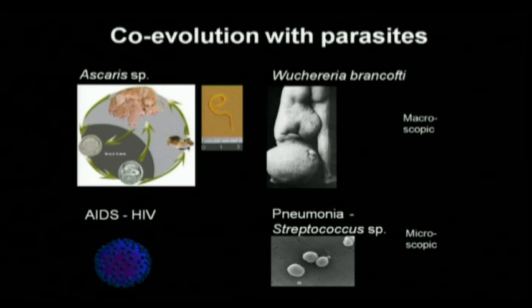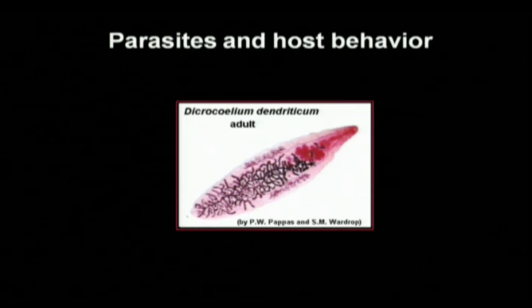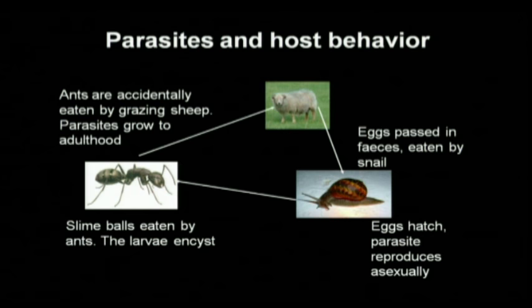Co-evolution refers to the evolution that two species exert on each other as they adapt to one another and may then diversify. Parasites or pathogens — the viruses and bacteria that are becoming very virulent and resistant — typically adapt very, very fast. Another striking example of co-evolution is this worm, Dicrocellium dendriticum, which actually induces changes in the behavior of ants.